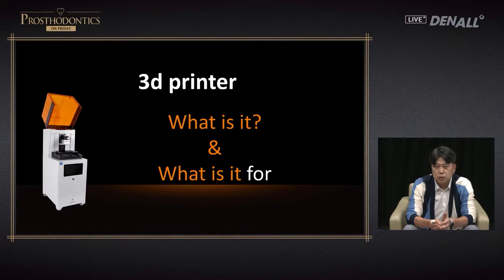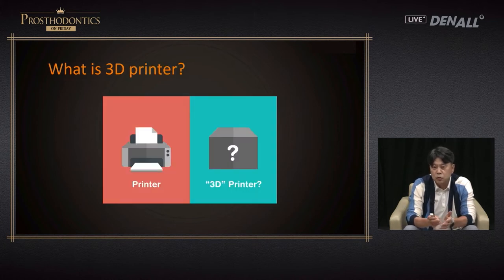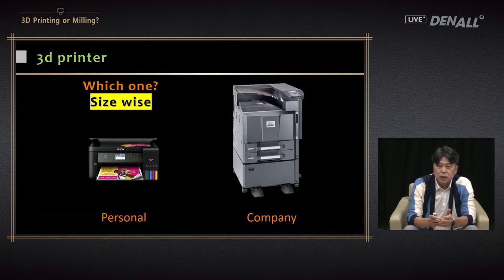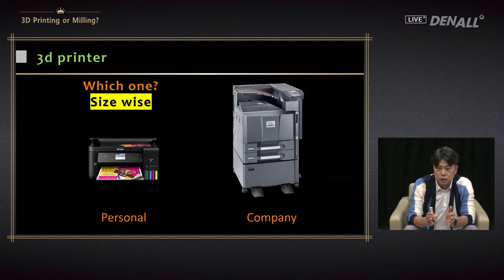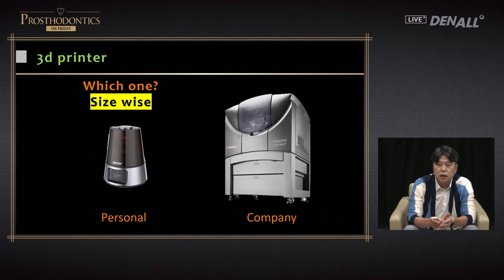What is a 3D printer? As you can see in the picture, 2D and 3D are different — 2D is two-dimensional, 3D is three-dimensional. For 2D, a printer such as an inkjet or laser printer is used; the output is something written on a piece of paper. For 3D printers, three-dimensional objects can be created, and there are different types based on size — personal printers for dental clinics and large ones for businesses.